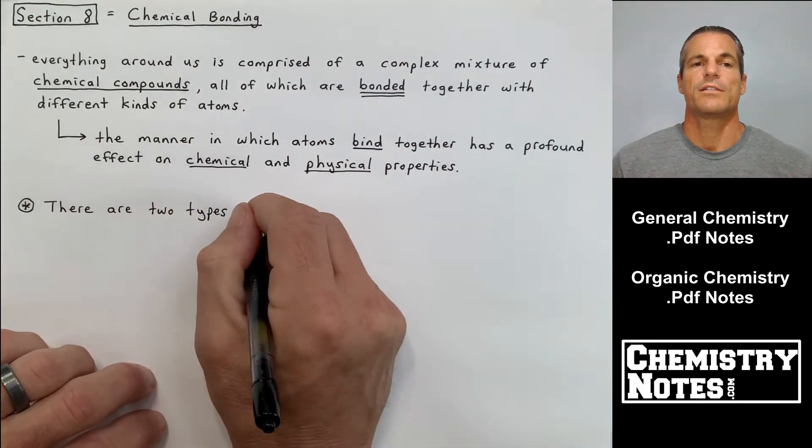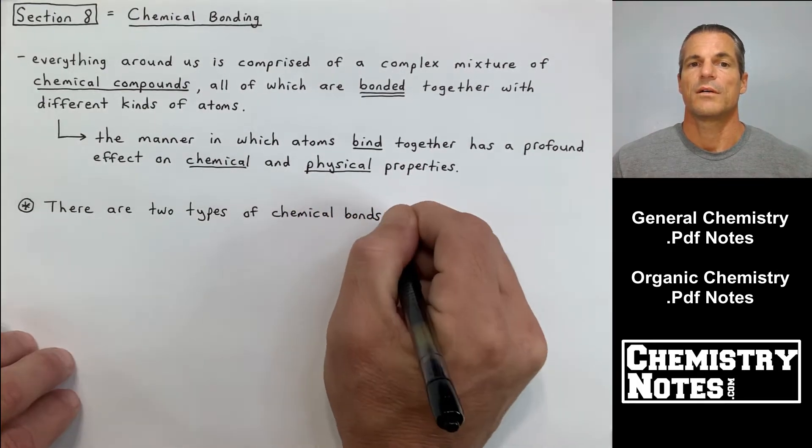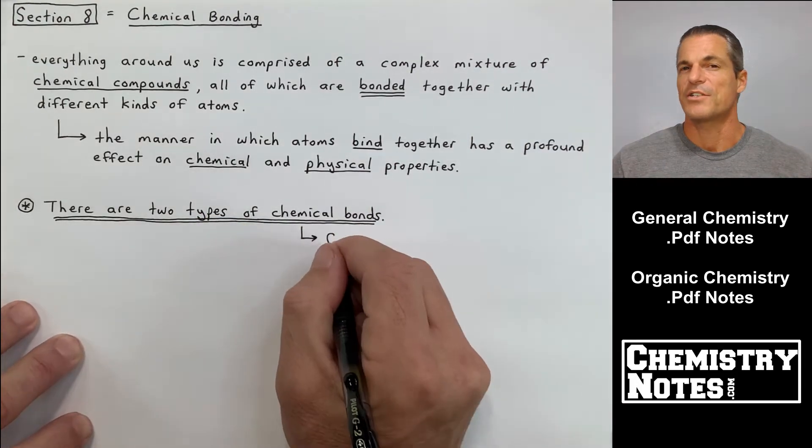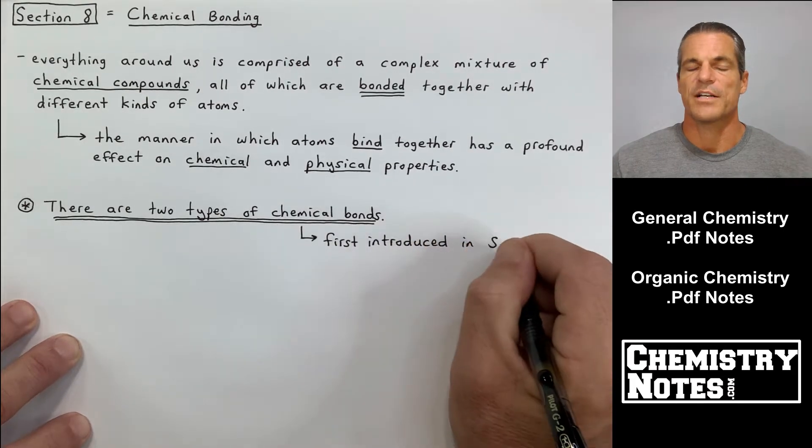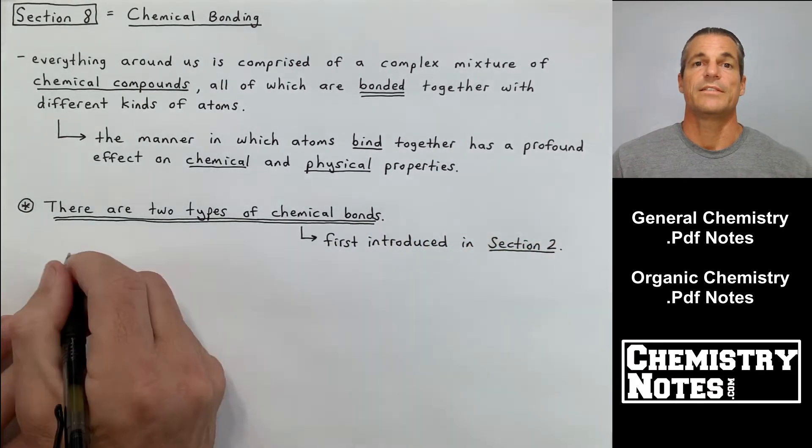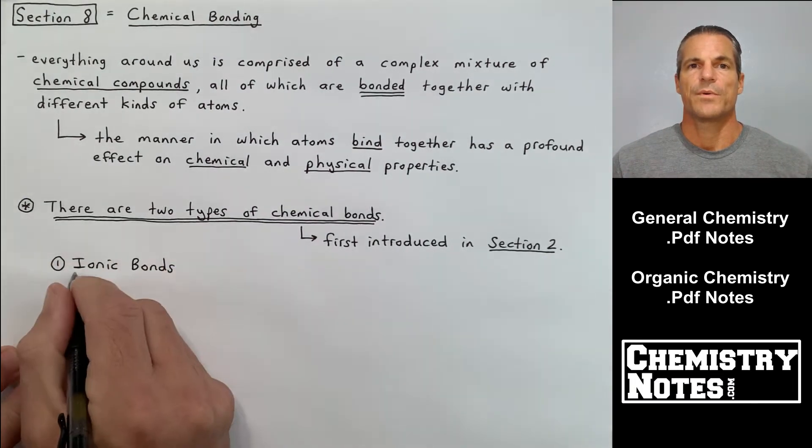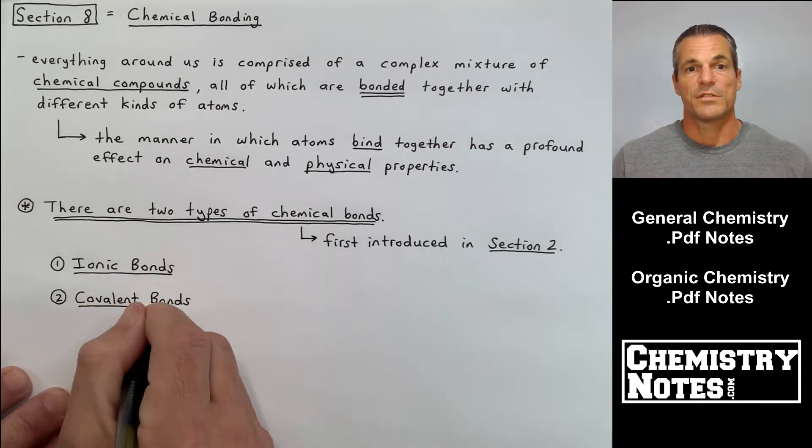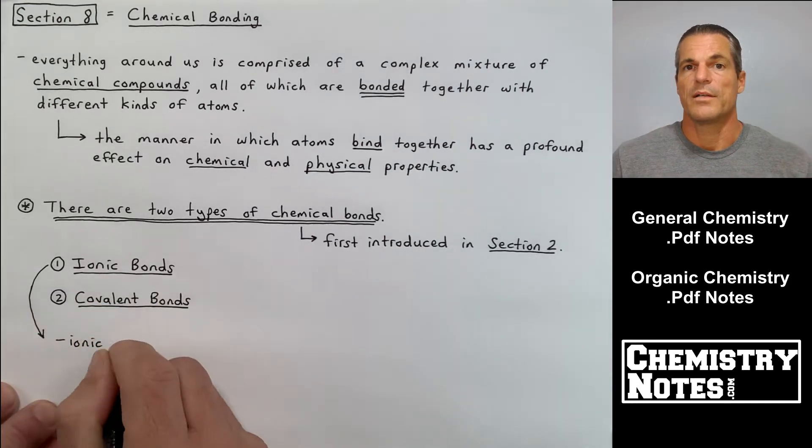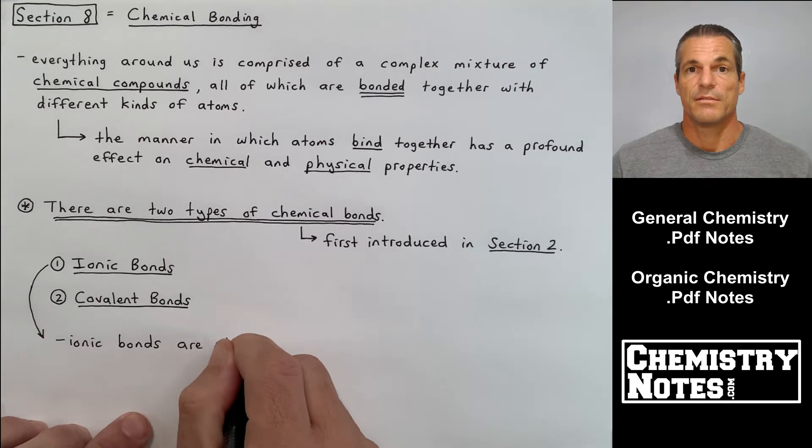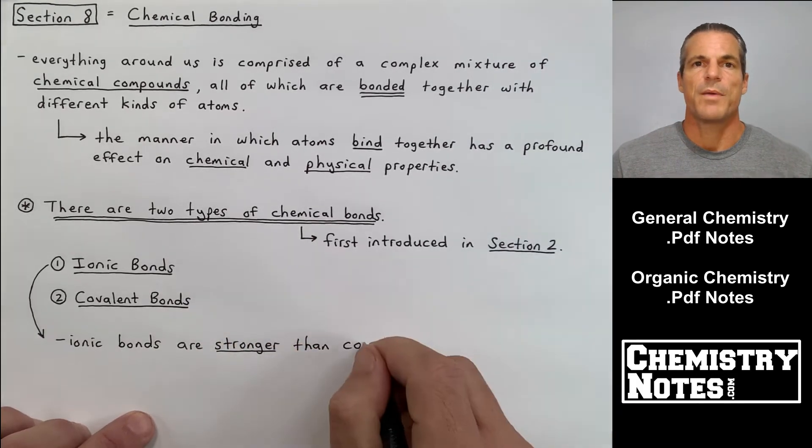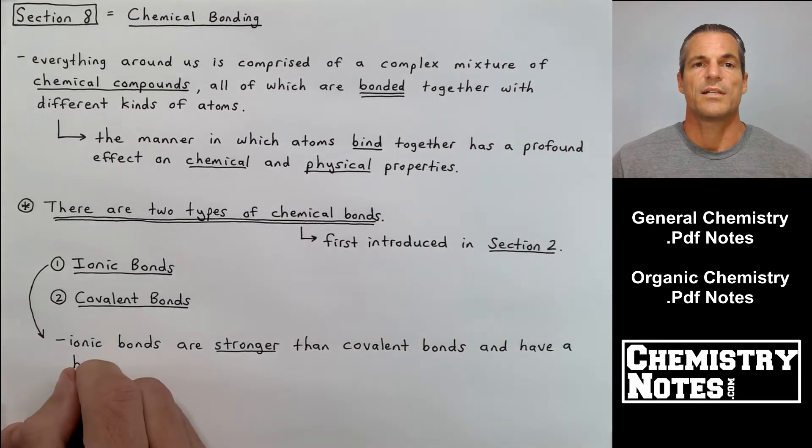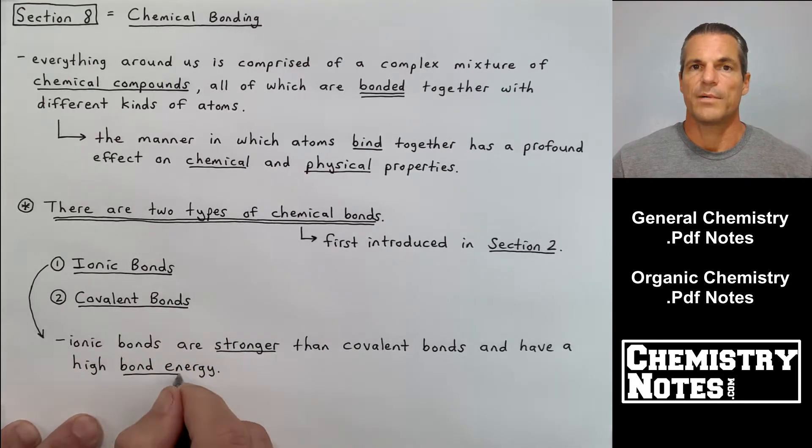We have a little star here because there are two types of chemical bonds. We were first introduced to chemical bonds back in Section 2, where we learned how to name ionic compounds and covalent compounds. We're going to elaborate much more on ionic bonding and covalent bonding in this section. The two types are: number one, ionic bonds, and number two, covalent bonds.